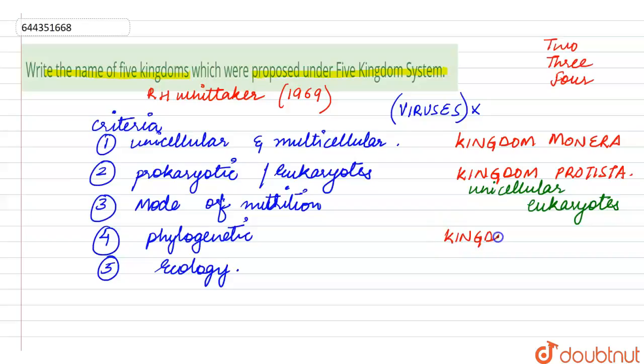The third one was the Kingdom Fungi. The Kingdom Fungi included all the members which were multicellular having a heterotrophic mode of nutrition, but they were eukaryotes. The fourth kingdom was Kingdom Animalia, consisting of multicellular animal cells.